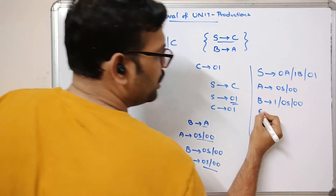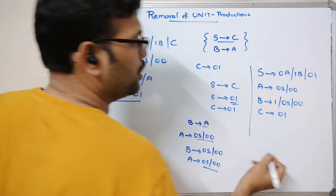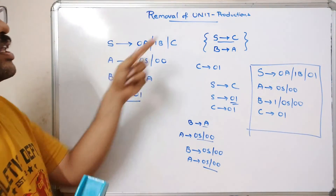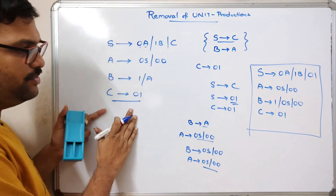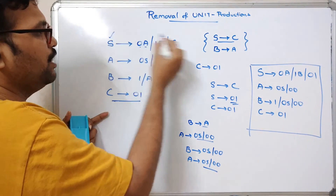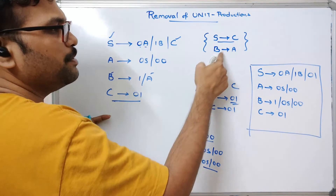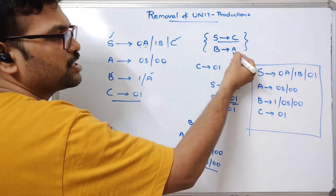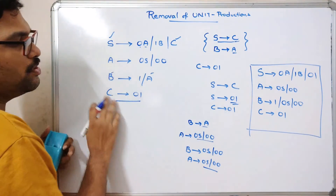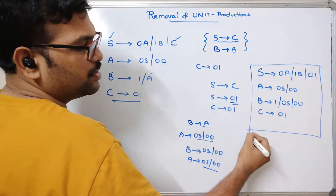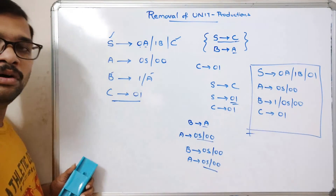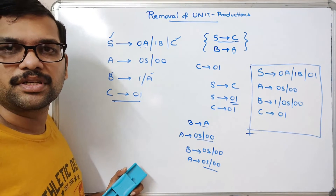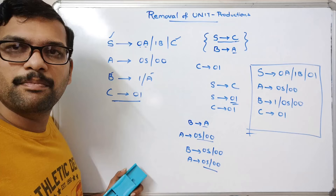And C→01 remains. So this is the simplification of the CFG by removing unit productions. Our CFG had two unit productions — S→C and B→A. We substituted C's production in place of S→C, and A's productions in place of B→A. In the result you can find there are no unit productions. This is how we remove unit productions. Let's go on to another example.